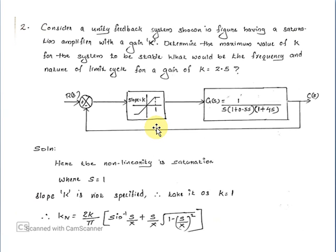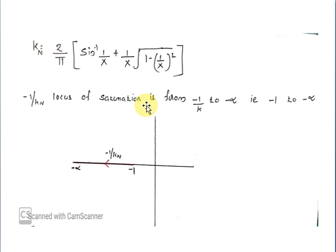First, consider the nonlinearity — it is saturation, with S equal to 1 and slope k equal to 1. Therefore the KN equation is: KN equals (2/π) into [sin inverse(1/X) plus (1/X) into root(1 minus (1/X)²)]. The minus 1 by KN locus of saturation is from minus 1 to minus infinity.